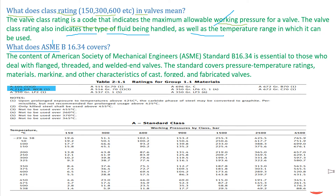The next question is: what does ASME B16.34 cover? ASME B16.34 is essential to those who deal with flanged, threaded, and welded-end valves. In one line, this standard covers threaded, welded, and flanged valves. The standard also covers pressure-temperature ratings of materials, marking, and other characteristics. The class rating — 150, 300, 600 — is defined in the ASME B16.34 standard.